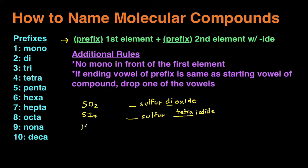Next example: N2O4. The first element is nitrogen, and we have two of them, so we write 'dinitrogen.' The second element is oxygen, and for the second element we add '-ide' to the root, so instead of 'oxygen' we write 'oxide,' just like we did earlier. We have four oxides, so we put 'tetra' in front. The name is dinitrogen tetroxide — meaning there are two nitrogens and four oxygens.